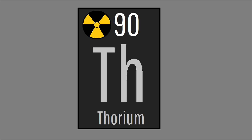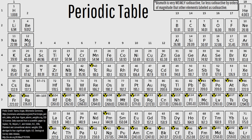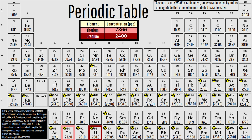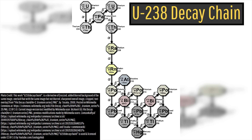Moving on, the second most common radioactive isotope is the main isotope of the element thorium in the crust, thorium-232. It outranks uranium isotopes because as a whole, thorium is both lower on the periodic table and is more common than uranium in the earth's crust. However, another thorium isotope, thorium-230, is the ninth most common, and despite its short half-life of 75,400 years, it remains at higher than expected concentrations since it represents a natural step on uranium-238's decay chain.